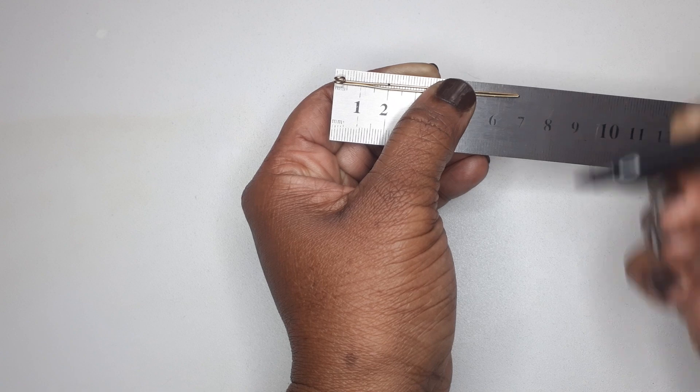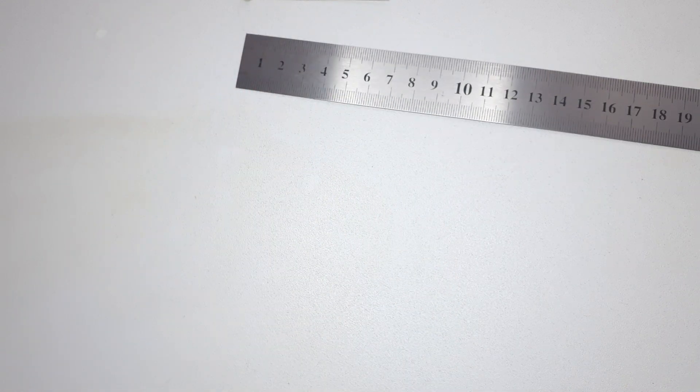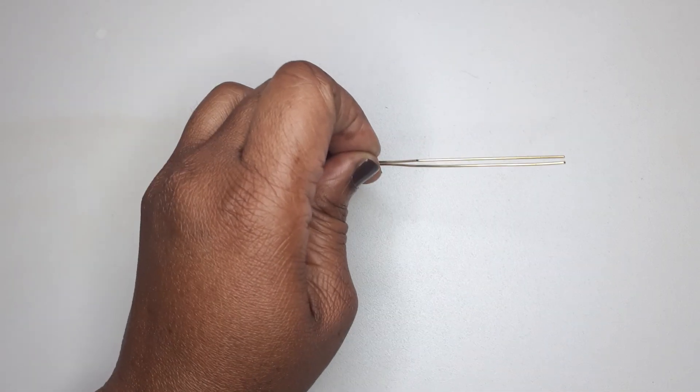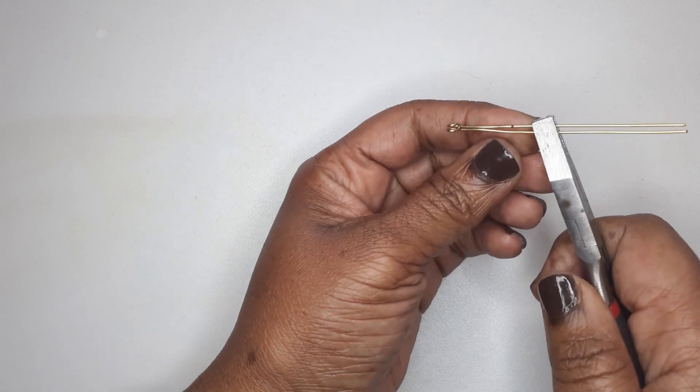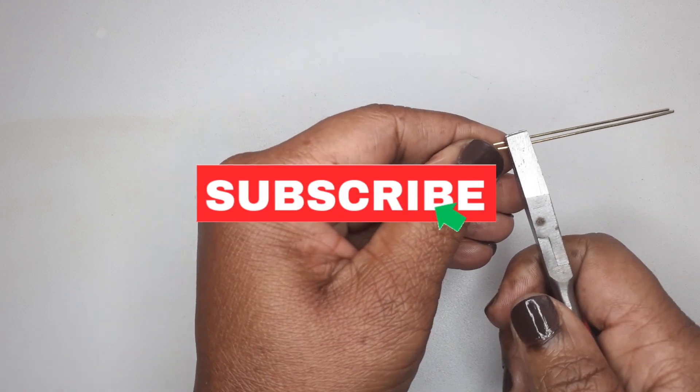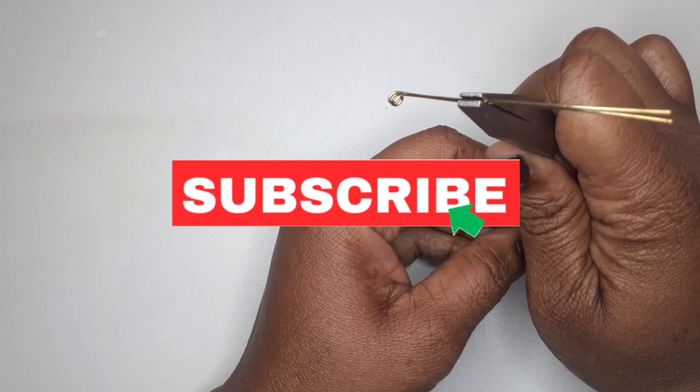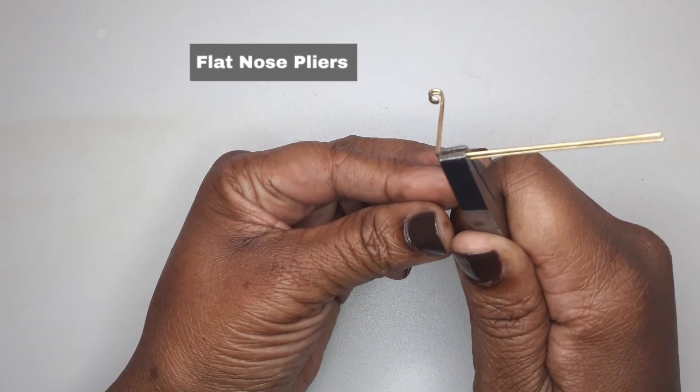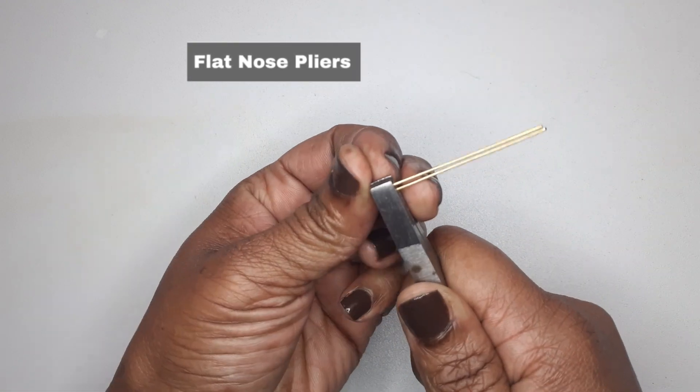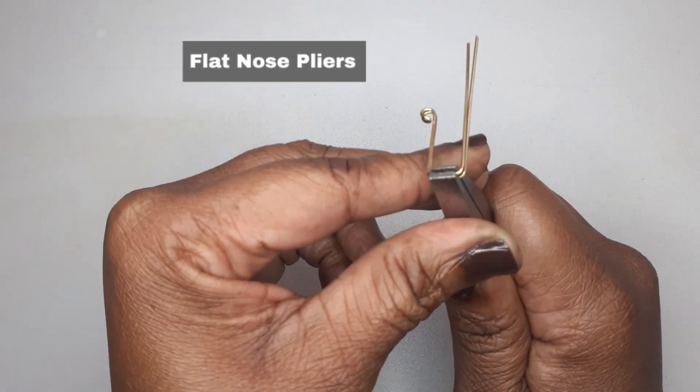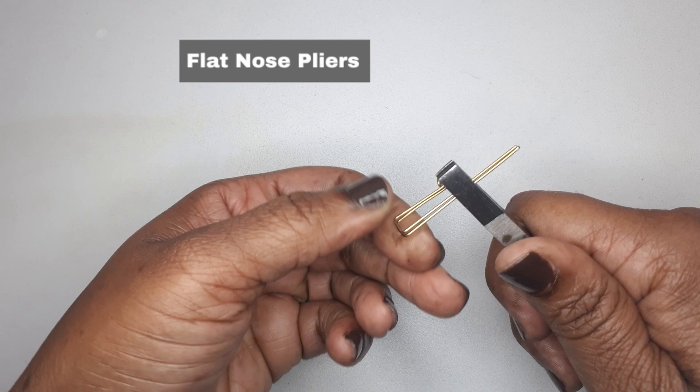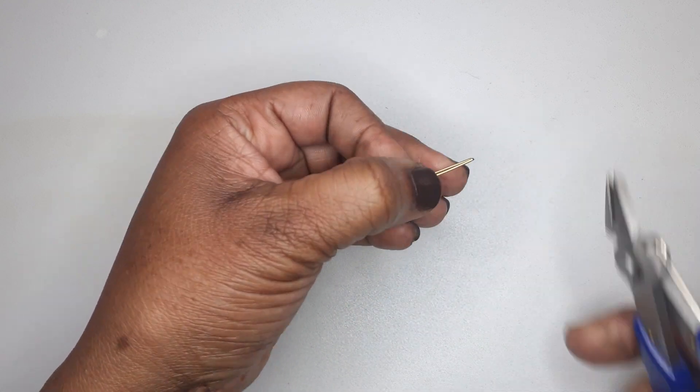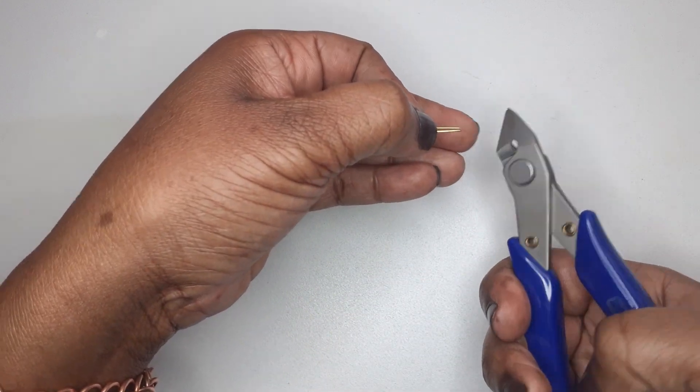With the loops pointing up, I'm going to bend the wire at two centimeters. Then, once I've done that, I trimmed the end of the wire.